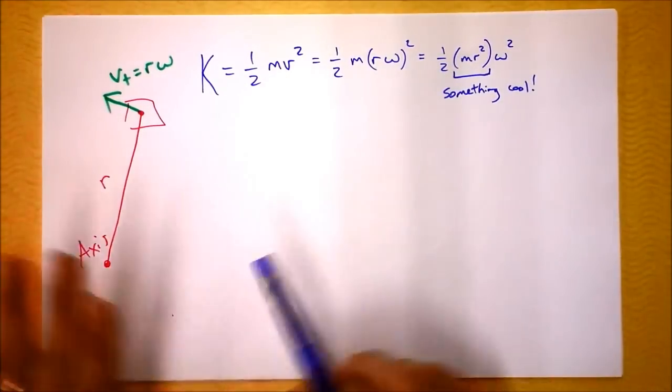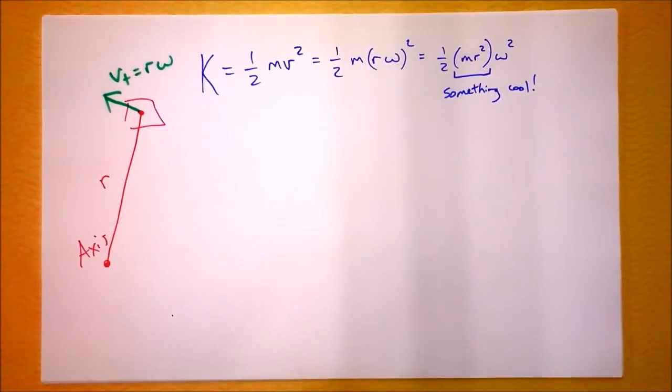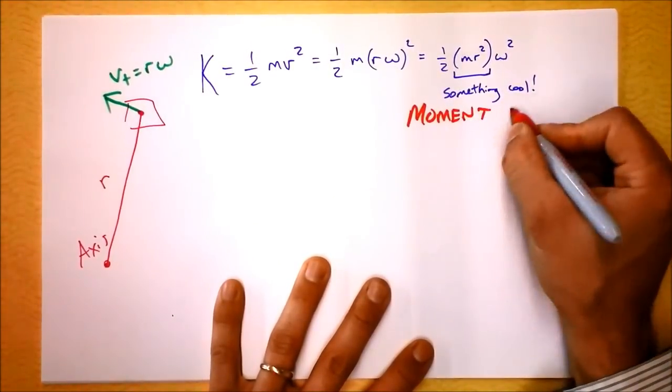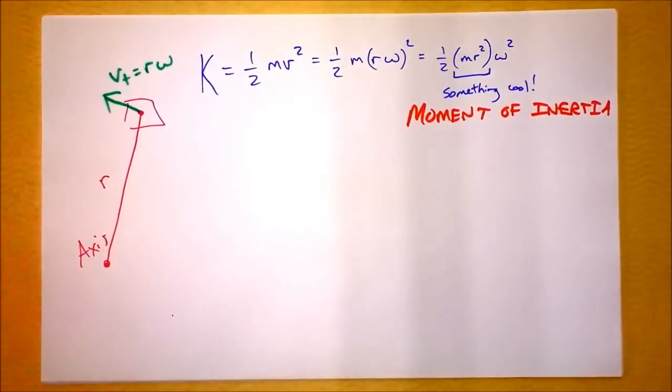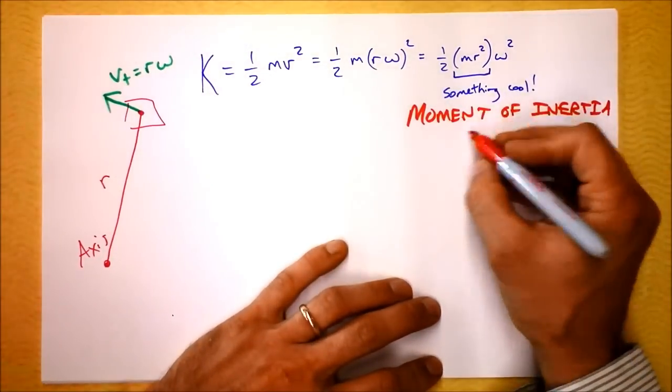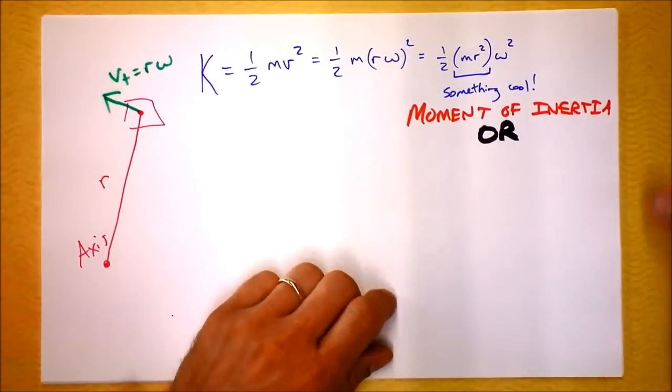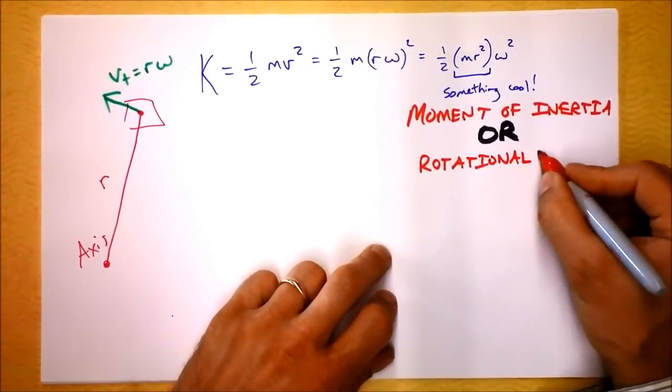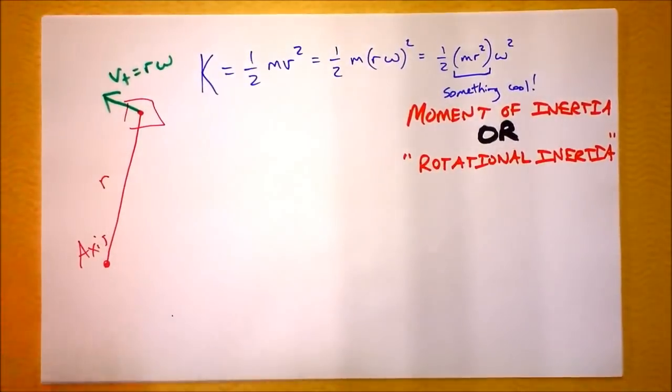So our plan is to take this equation, one-half mV squared, and make it into a rotational equation. This something cool that I want you to recognize is, well, you don't have to recognize it yet, but this is called the moment of inertia. Moment of inertia is the standard name for this thing, but I'd like to call it something else. I'd like to call it rotational inertia. So we'll put a little or here, and this is my personal preference.